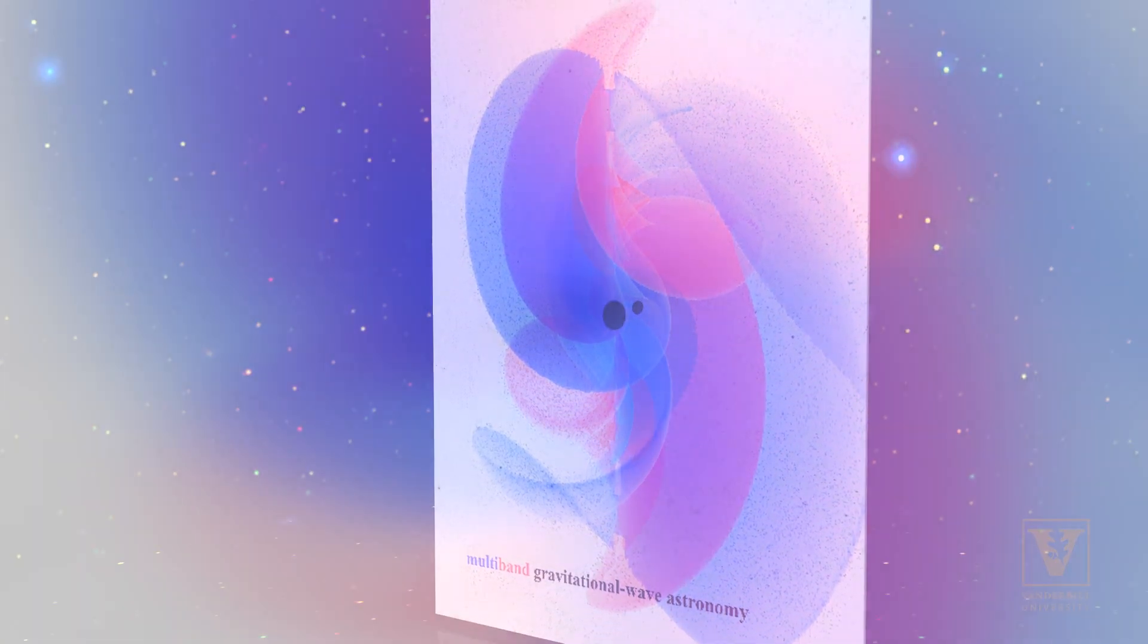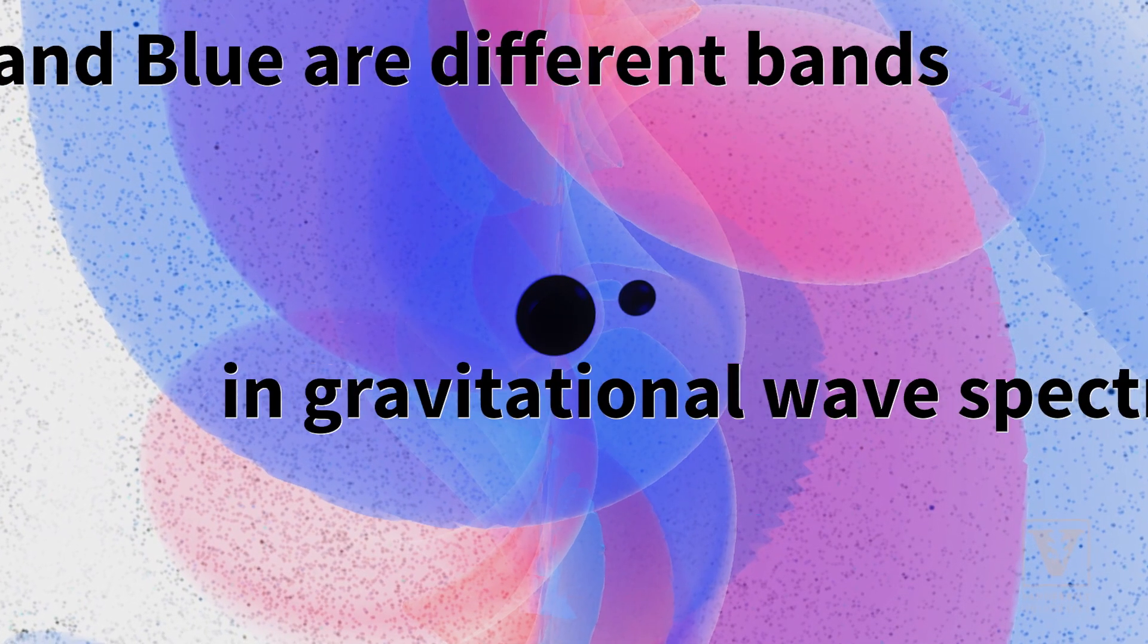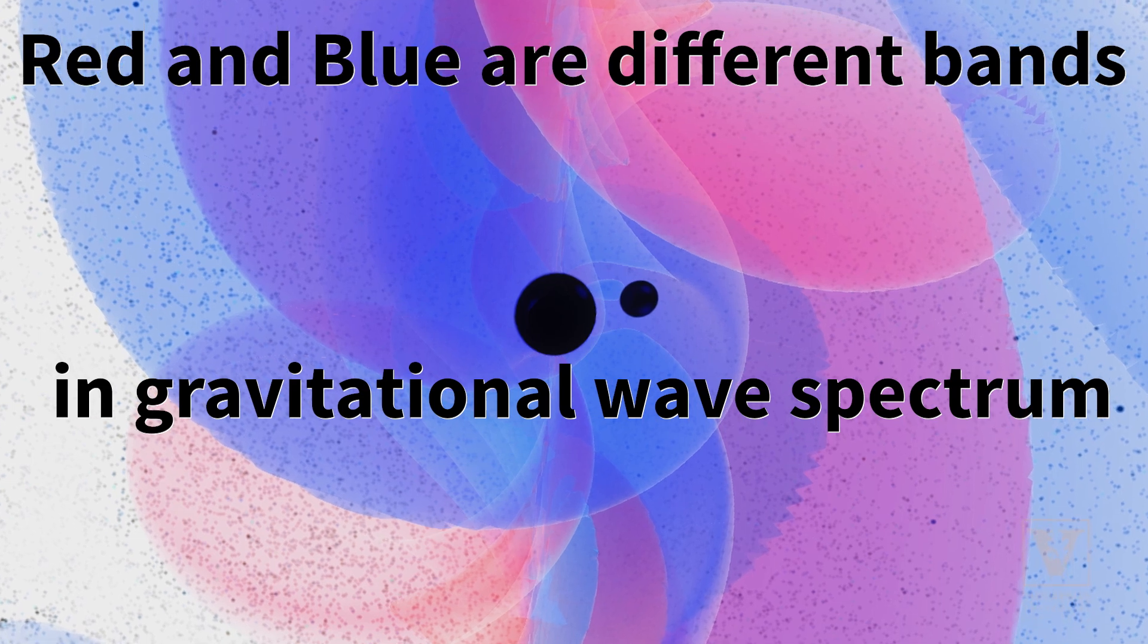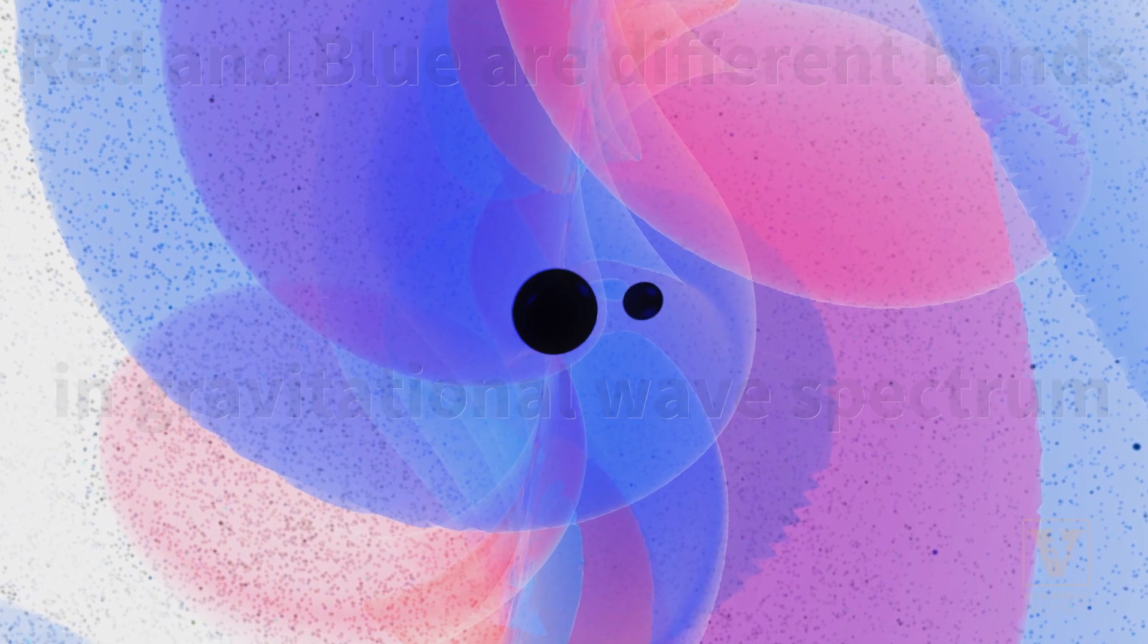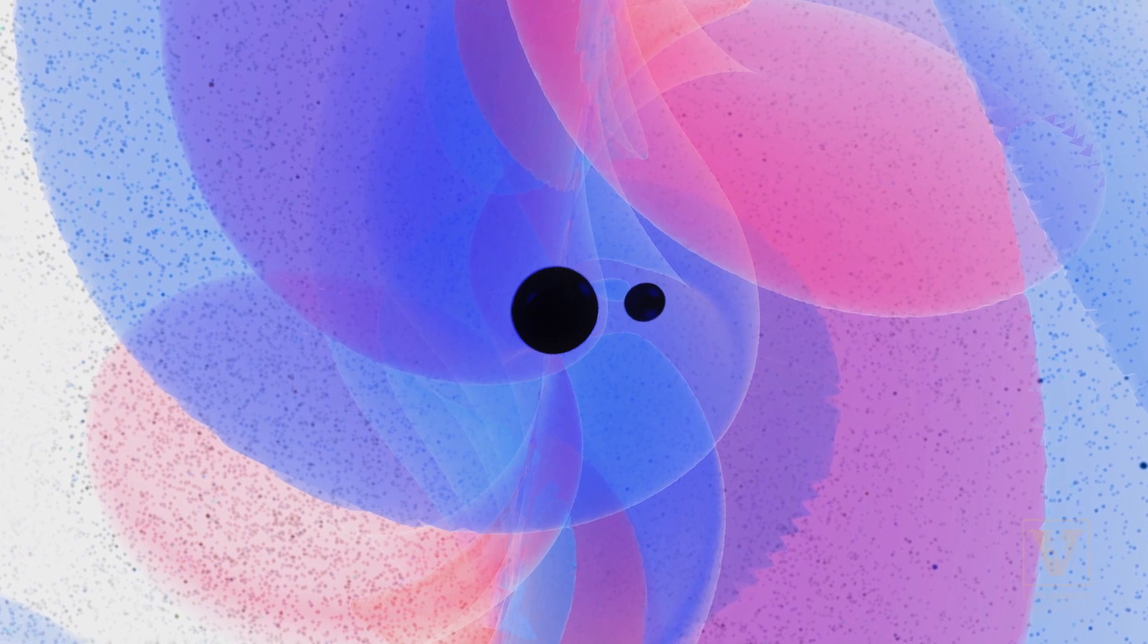You can almost think of this picture itself being an animation, because the low frequency, the blue color for example, happens at a different time than the red one that happens slightly later. So we get this sort of four or five year picture of what a black hole is doing.